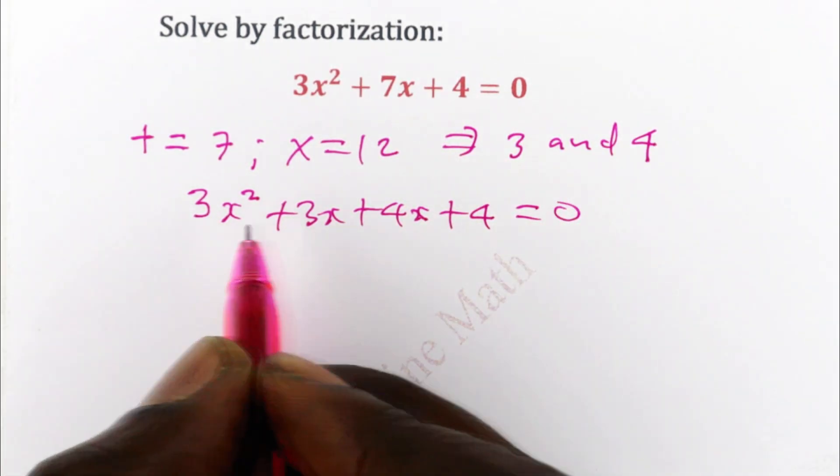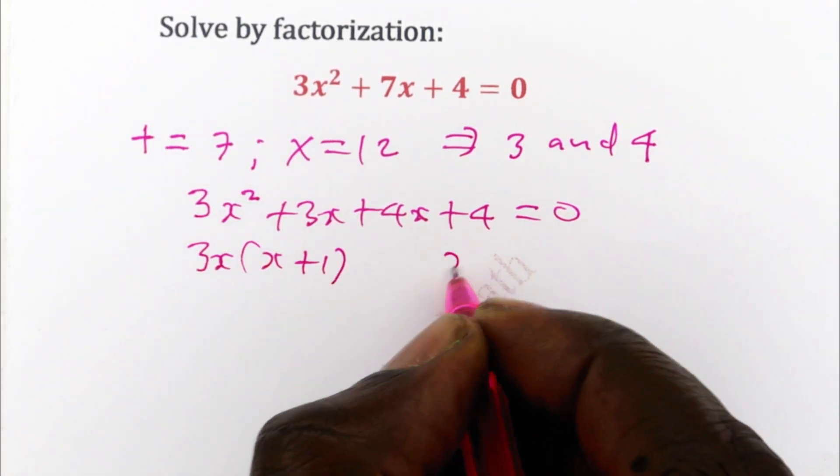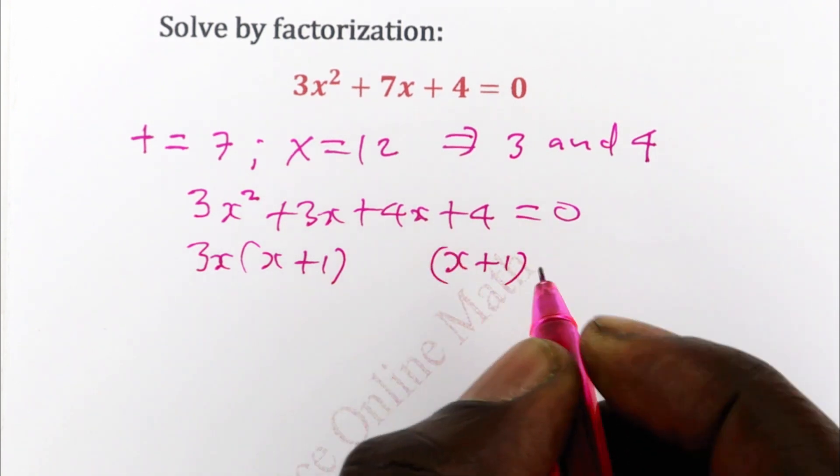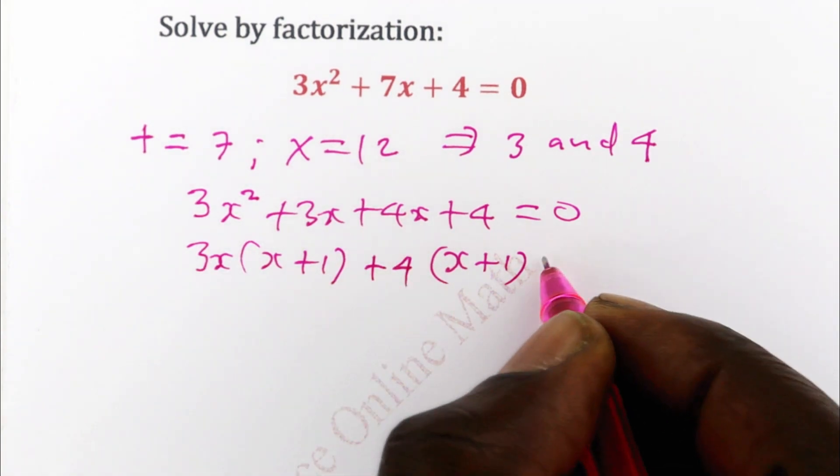So the common factor between these two is 3x. So into x plus 1. So you expect x plus 1 this side. And for you to have obtained 4 from 1, it means you multiplied it by positive 4.